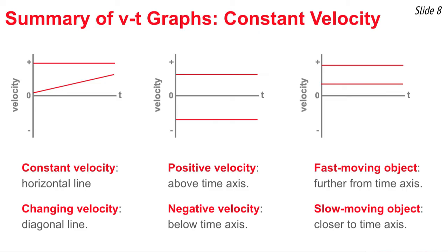Here's a summary of the three things we've discussed. First, constant velocity is represented by a horizontal line on a velocity-time graph, while changing velocity is represented by a diagonal line. Second, positive velocity is plotted in the positive region above the time axis, and negative velocity is plotted below the time axis. Third, fast-moving objects have a larger positive or negative velocity and are plotted further from the time axis, while slow-moving objects are plotted closer to the time axis — closer to the v equals zero mark.